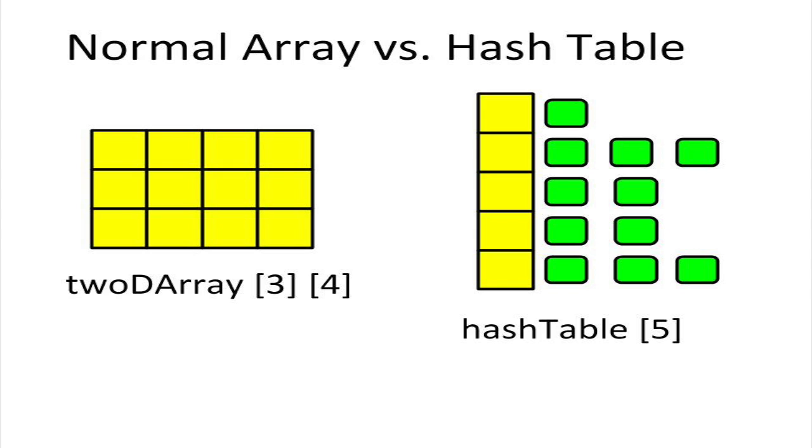A simple hash table is like a multi-dimensional array. In a two-dimensional array, the elements consist of rows of a fixed length. In the picture being shown, we have a two-dimensional array with a length of three elements. Each of these elements is exactly four elements long. No more, no less. Notice that the maximum size of this two-dimensional array is 12. That means it can store no more than 12 data entries.